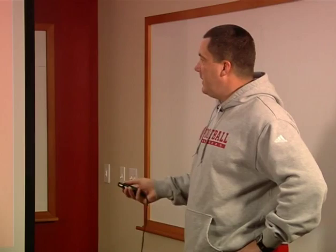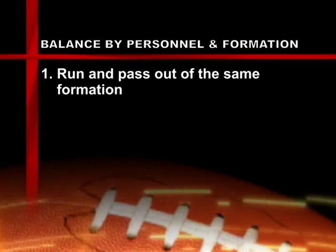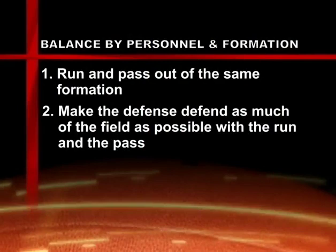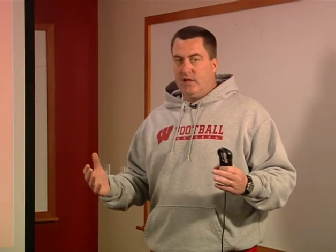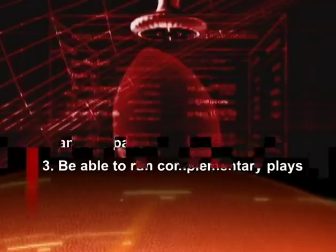Balance by run/pass and also balance by personnel and formation. If you're using two tight ends, two receivers, and one back, you want to make sure that when that grouping is on the field you've got a balance of being able to run and throw the ball. It's really important to make the defense defend as much of the field as possible — can you throw the ball effectively and run the ball effectively out of that formation? The last thing is the ability to run complementary plays, what we call packaging.